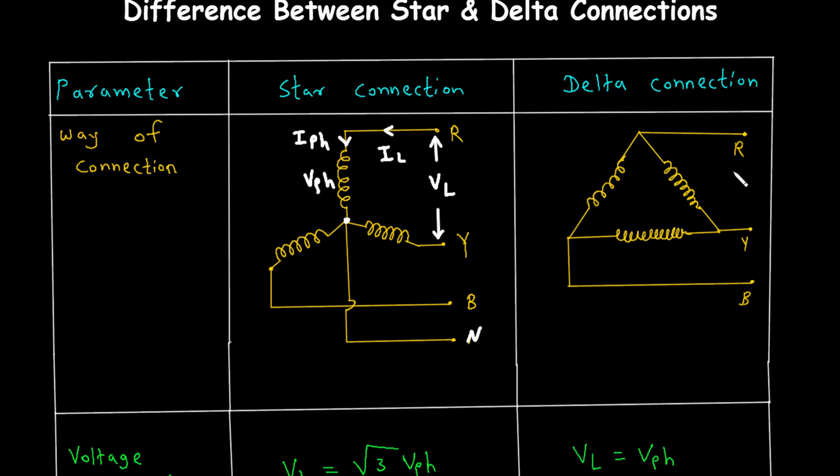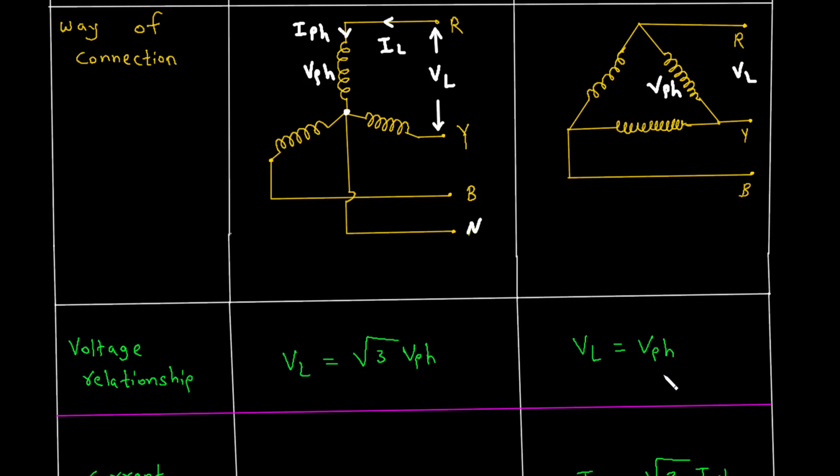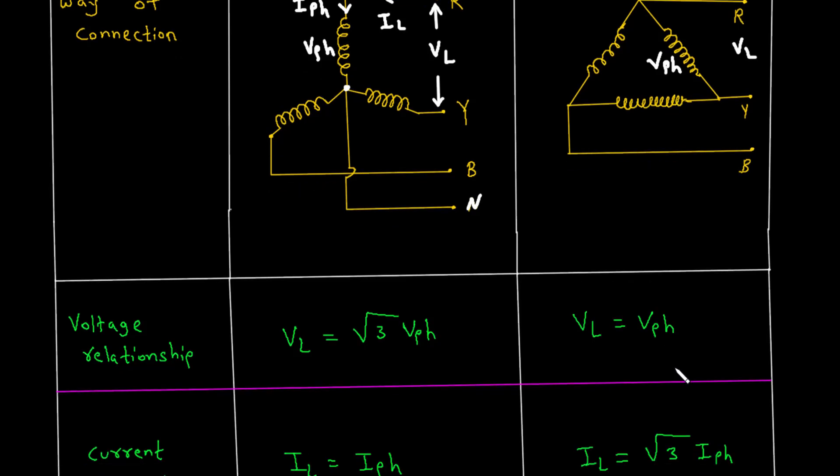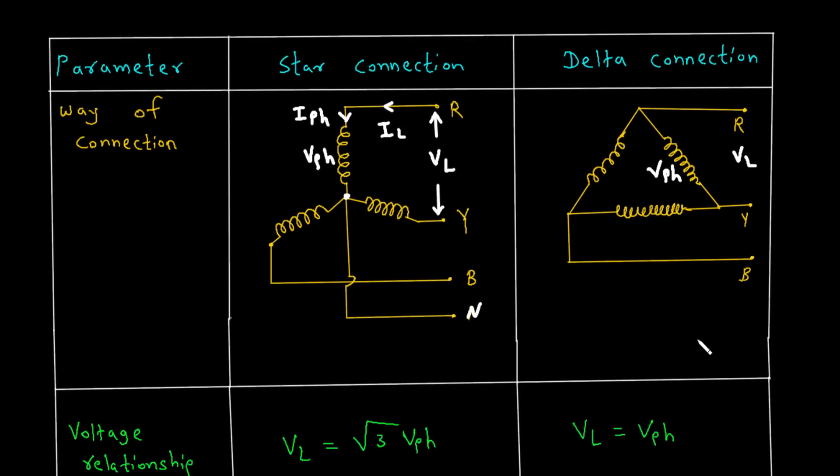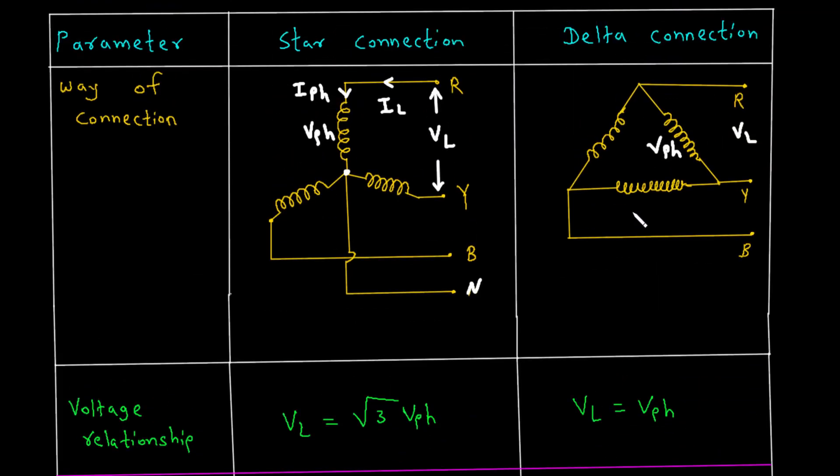In a delta connection, the voltage across each phase winding is the same as the voltage between the lines. This means the line voltage, V underscore L, is equal to the phase voltage, V underscore pH. Unlike the star connection, there's no multiplication factor here because each phase is directly connected across two lines.